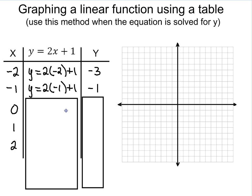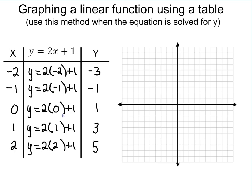And we continue this process for the other values. You see 2 times 0 plus 1, 2 times 1 plus 1, 2 times 2 plus 1, which gives you 1, 3, and 5, respectively.